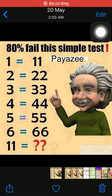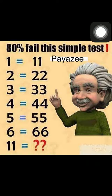Welcome to the Pyazi channel. Today I came up with this simple mathematics logical puzzle. You can see a series of equations and we have to find the final equation value. The first equation: one equals eleven, two equals twenty-two, three equals thirty-three, four equals forty-four. Similarly, we have to find the value for eleven equals question mark.